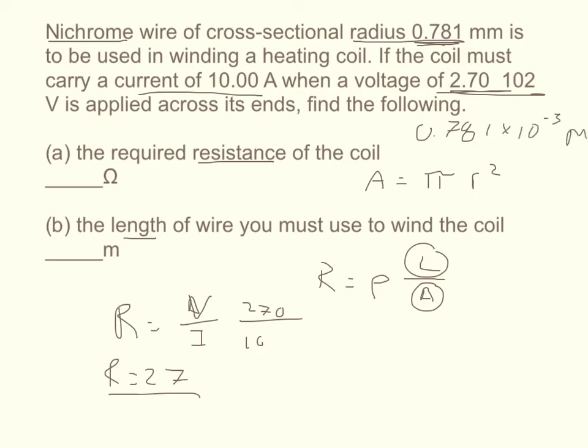And then we're going to square that. So pi R squared is going to give our area. So we're going to solve for L. R times area over resistivity equals length.